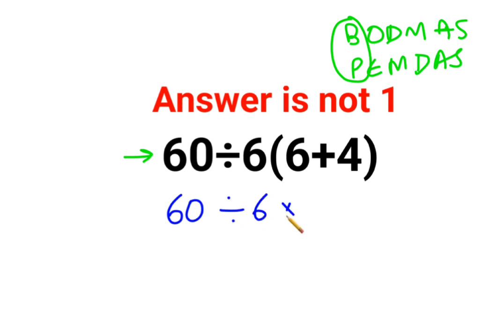Since there is no sign between 6 and the bracket, there is a multiplication sign, and 6 plus 4 is 10. Now this is where things get tricky. They think that let's just do this first, so 60 divided by 6 into 10, that is 60.